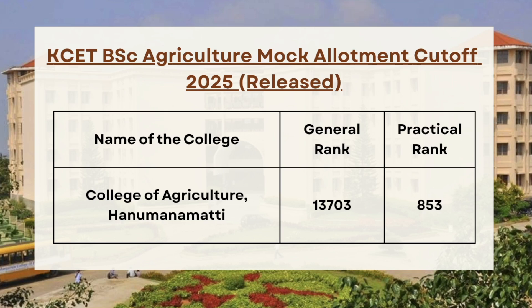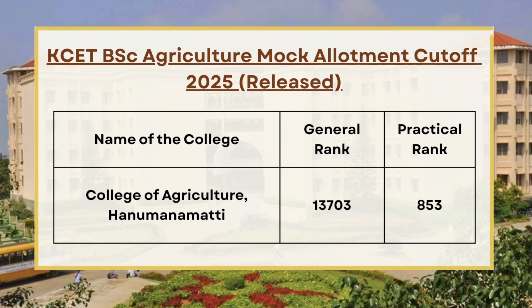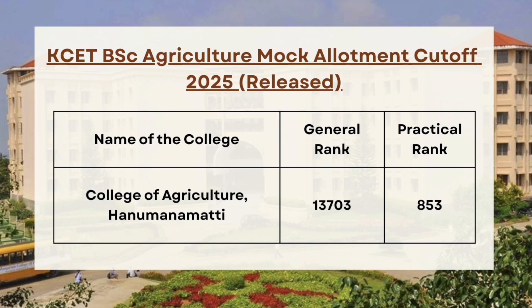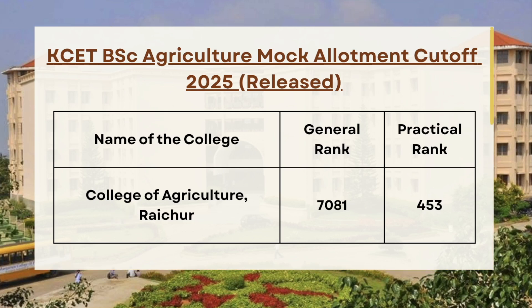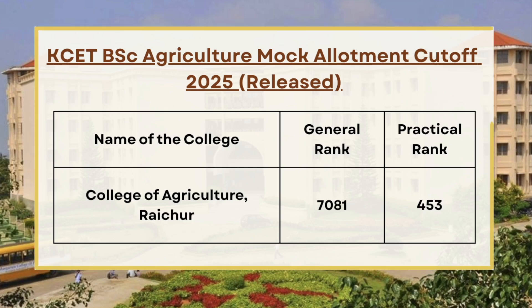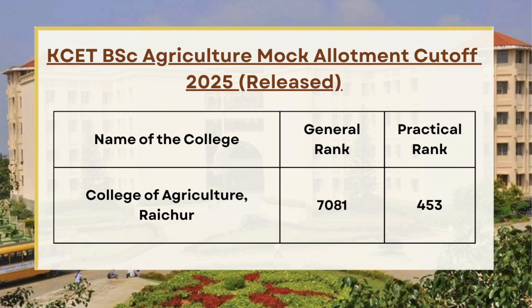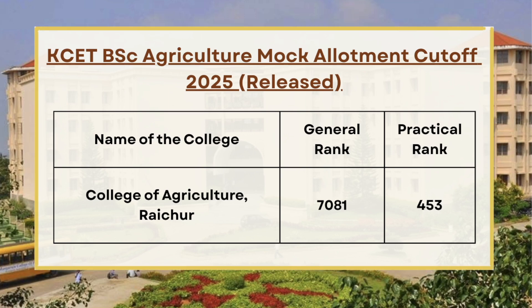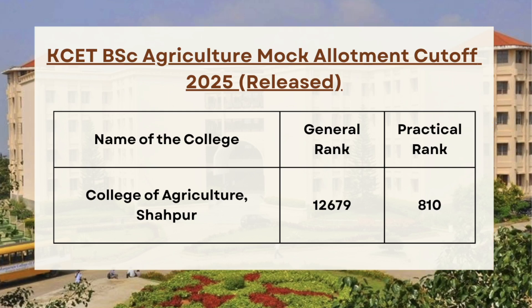For College of Agriculture Hanumanthi, the general category cutoff is 13703 and for practical the cutoff is 853. It must be noted that these are the mock allotment cutoffs — the official round one cutoff will be released after the announcement of seat allotment. Next we have College of Agriculture Raychur, so for general category the cutoff is 7081 and for practical it is 453.